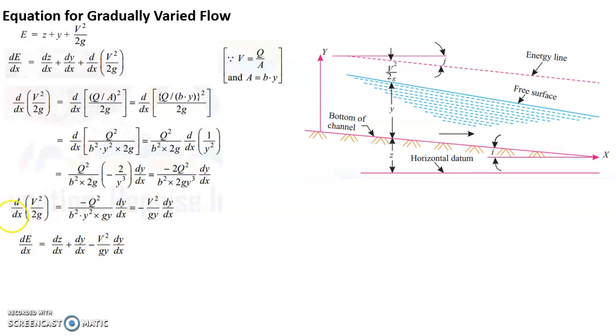Now I will club the terms which have DY by DX. So you have DY by DX. You can take this out as a common thing. So DE by DX equals to DZ by DX plus DY by DX into 1 minus V square by GY.